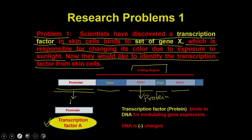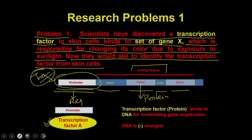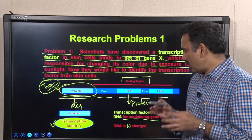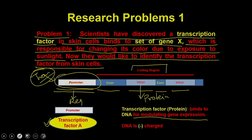To understand the solution, you need to know the design of a gene and the function of a transcription factor. A coding gene in mammalian cells contains a promoter region followed by exons and introns (the coding region). The promoter regulates expression by binding transcription factors. Transcription factors are proteins that bind to DNA — specifically to the promoter regions — and modulate gene expression.